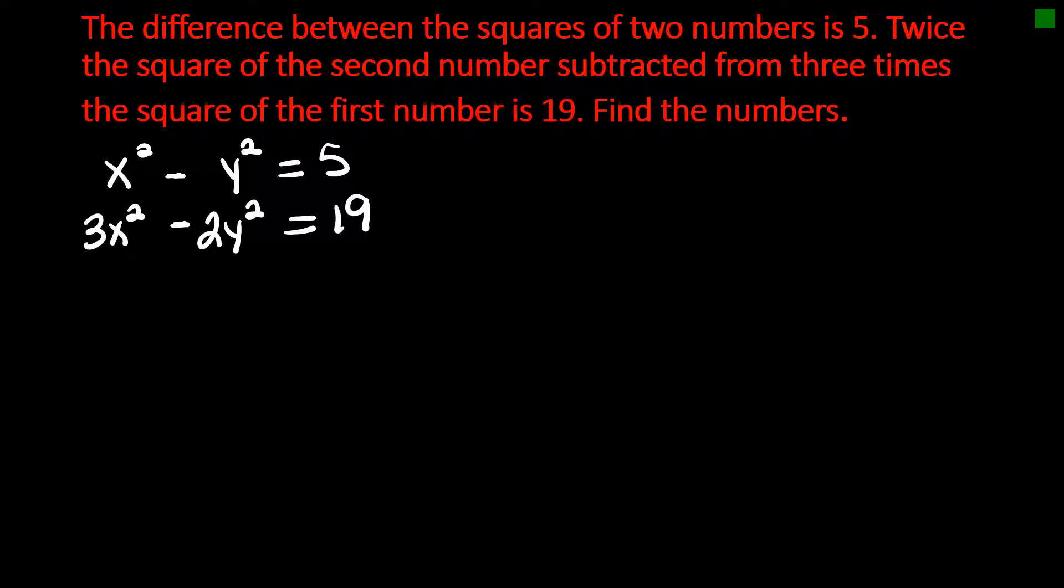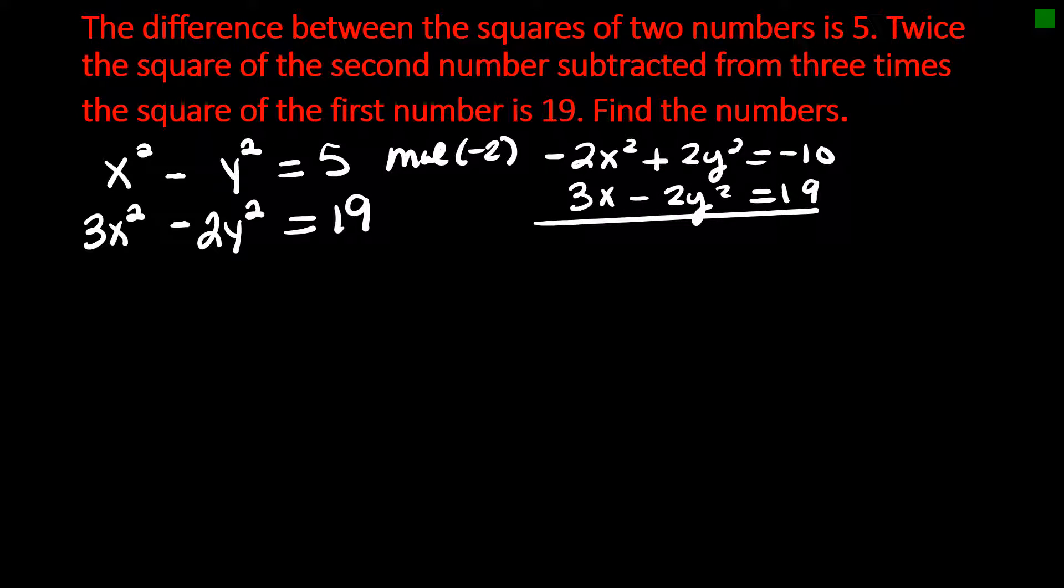Well, I can use elimination here. I can multiply my first equation by negative 2 and I can eliminate the y's. So I have negative 2x squared plus 2y squared equals negative 10. My second equation stays the same. When I add, I get x squared equals 9. So x is going to be plus or minus 3.